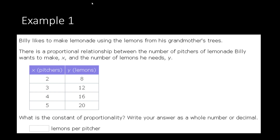Example one: Billy likes to make lemonade using the lemons from his grandmother's trees. There's a proportional relationship between the number of pitchers of lemonade Billy wants to make — we're calling that x — and the number of lemons he needs, that's y. When Billy wants to make two pitchers he needs eight lemons, three pitchers he needs 12, four pitchers he'll need 16, and five he'll need 20.